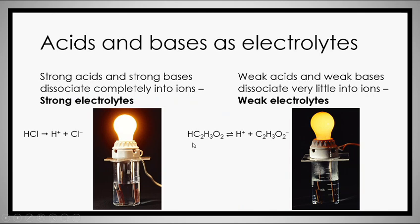Returning to electrolytes: strong acids, strong bases, and soluble substances make very strong electrolytes. Something like hydrochloric acid — because it's a very strong acid — completely dissociates and becomes separate ions. Inside the container you have no HCl; you just have H+ ions and Cl- ions. Because of those two free-moving ions, they can transfer electrons between electrodes.